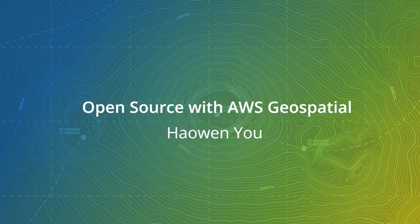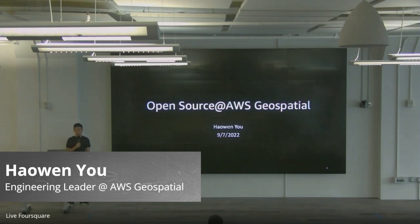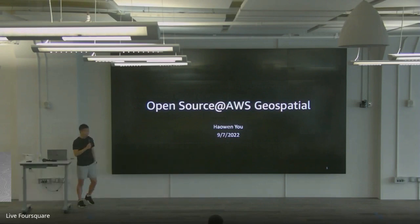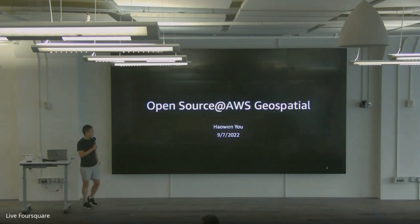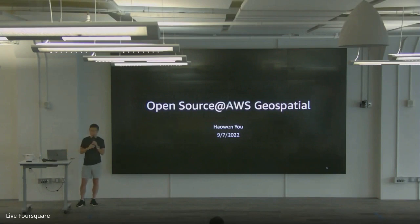I'll get started. People, feel free to continue to get your food or chat a bit, because my content is not going to be as intense as the previous sessions. I'm just talking a little bit about how we do open source at AWS Geospatial organization, which I've come from. I will talk a little bit more about our engagement with MapLibre community, but you will find more information from Uri's presentation about MapLibre and more details.